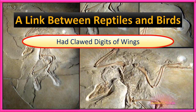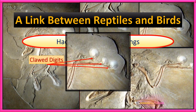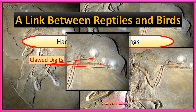Another unique feature: hooked claw digits on the wings. Observe these claws in the wings — the wings have feathers but also claws. These claws are considered to have been used for clinging onto trees or branches.